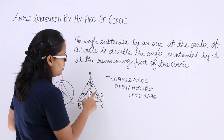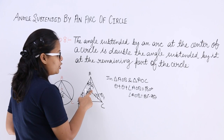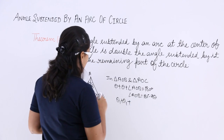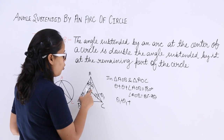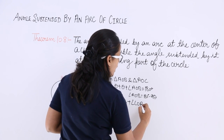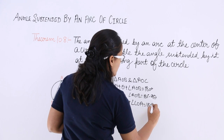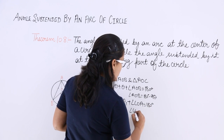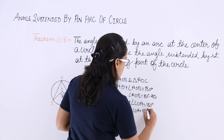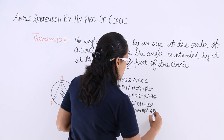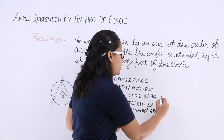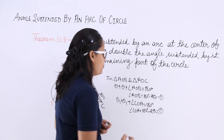In triangle AOC, the angles are θ1 + θ1 + angle COA = 180°. Therefore, angle COA = 180° − 2θ1. Let this be equation 2.